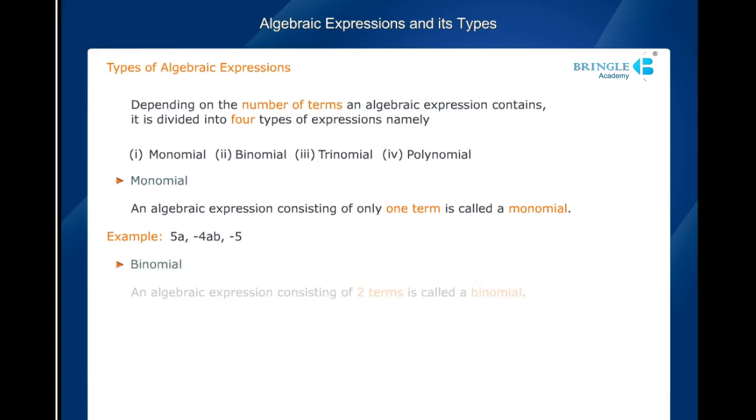Binomial: An algebraic expression consisting of two terms is called a binomial. For example, the expression 2x - 5 has two terms, namely 2x and -5.